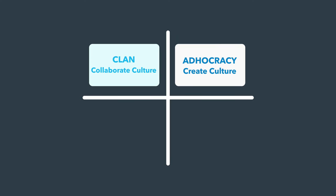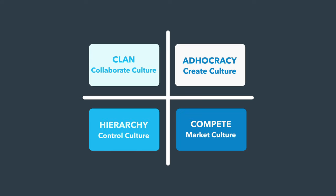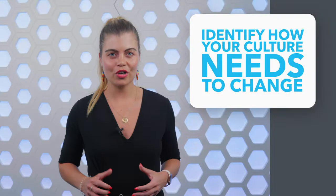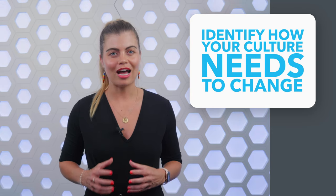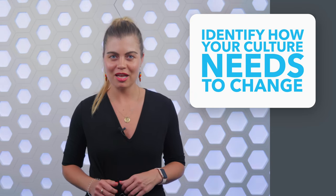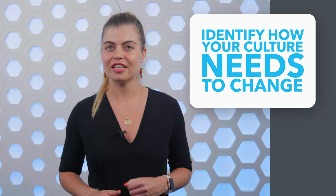The second is Clan, or collaborate culture, which is people-oriented and friendly. The third is Hierarchy, or control culture, which is process-oriented and structured. The fourth is Compete, or market culture, which is results-oriented and competitive. Look at your organization's objectives and find ways to help the culture evolve to a new dimension that more effectively supports your strategic objectives and workforce needs.